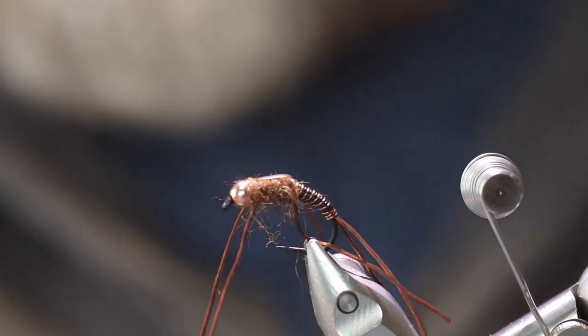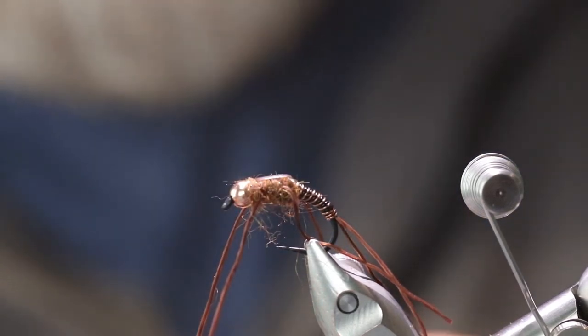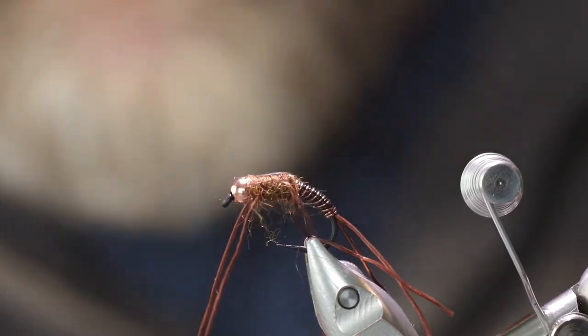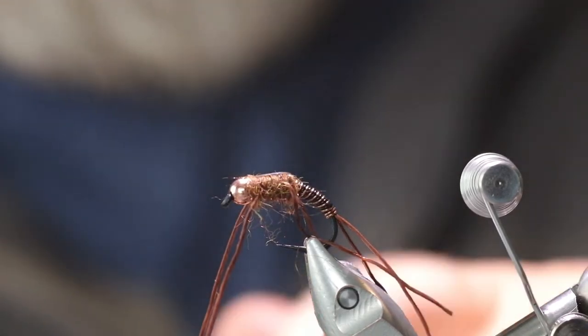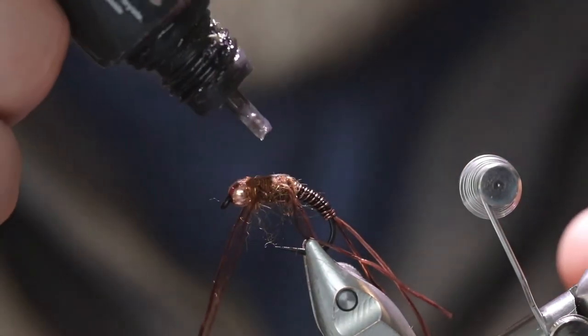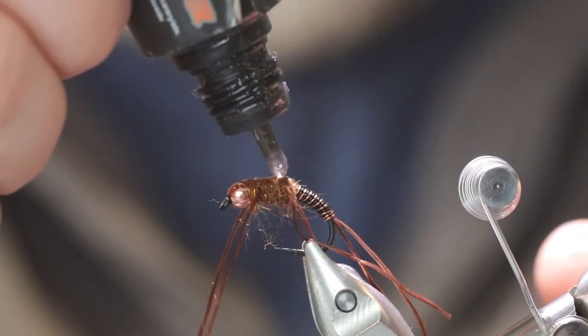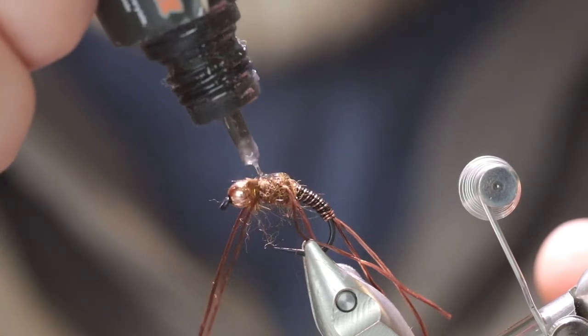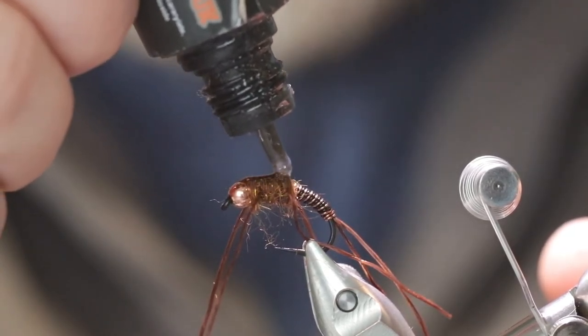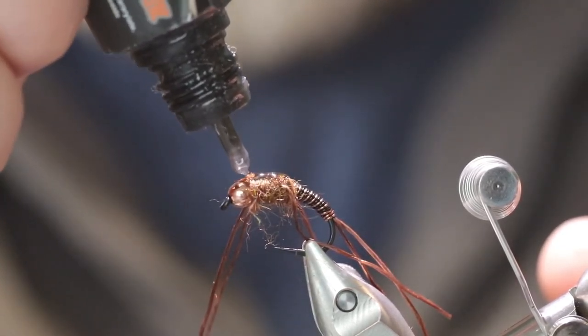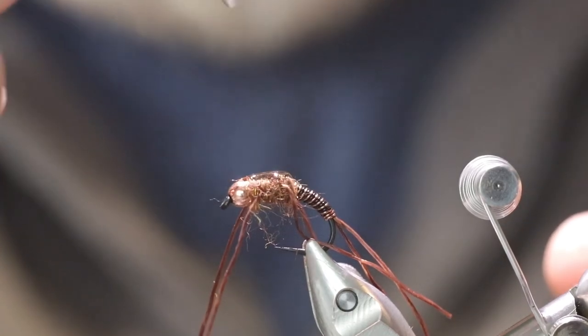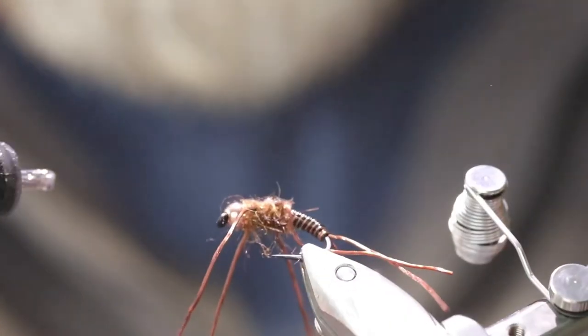Now I'm going to use Deer Creek UV cement. It's nice and hard and it dries clear. I like to go right on up into the bead with it. If you want it thicker than just a little dab on there.